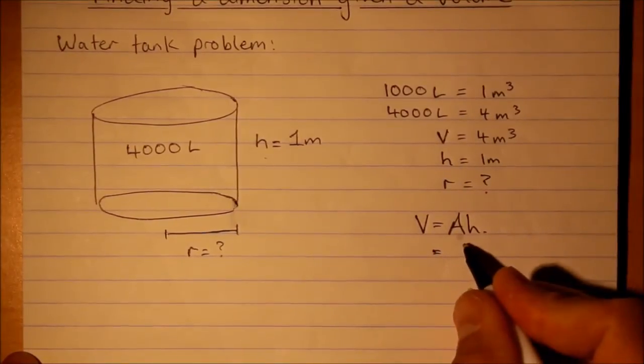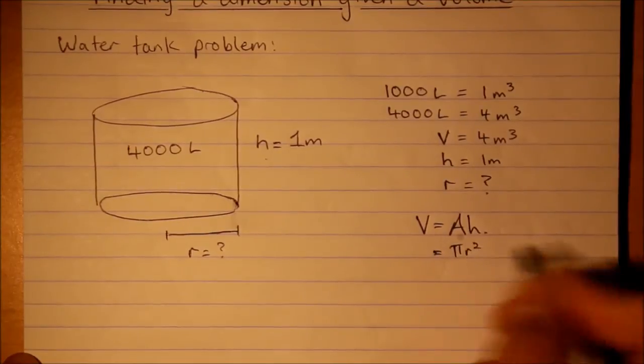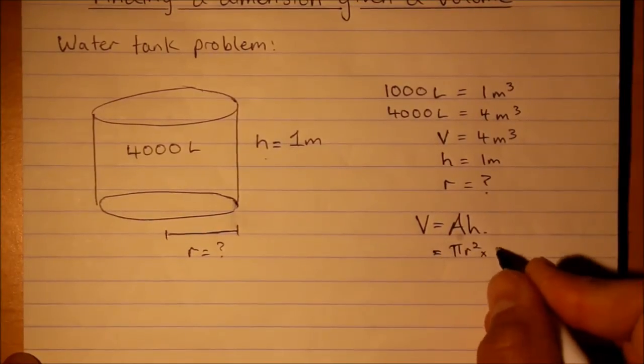So what is the area of this cross section here? Well that's a circle. Pi r squared times the height.